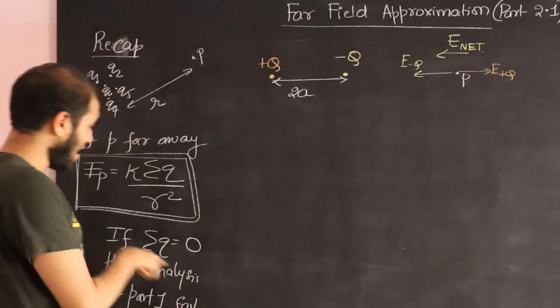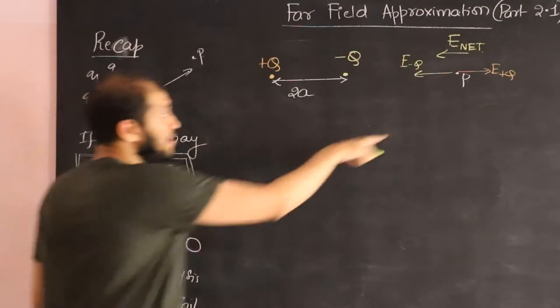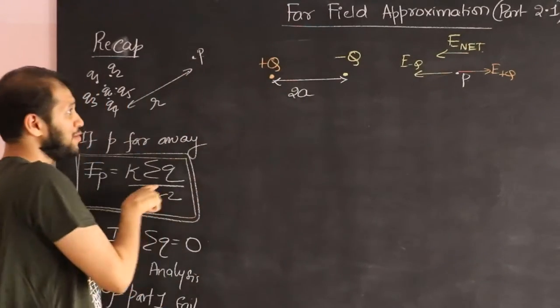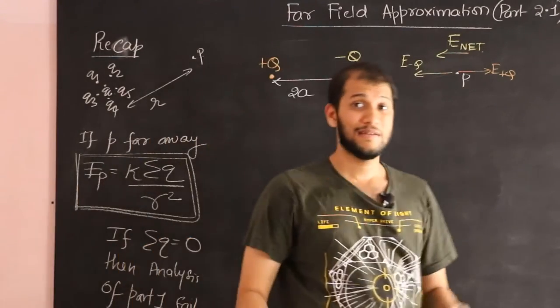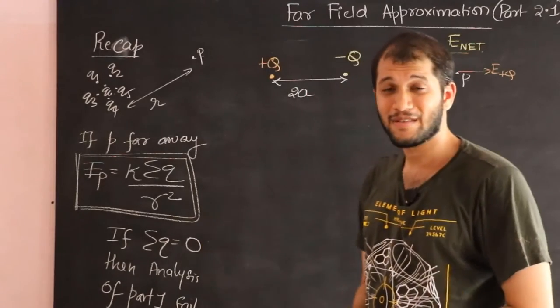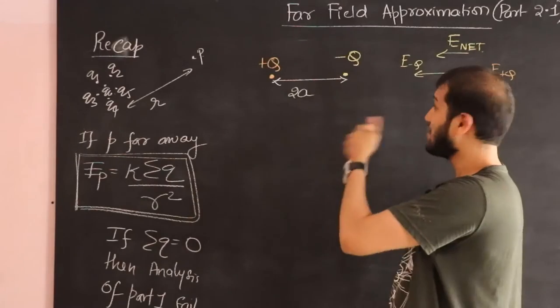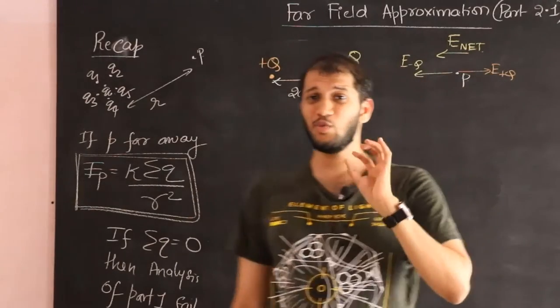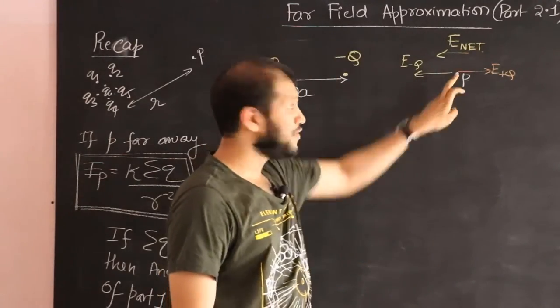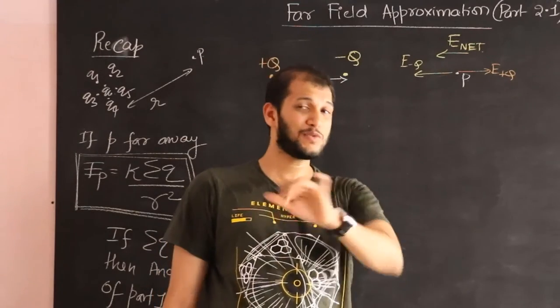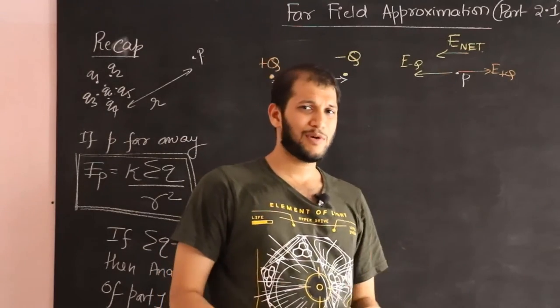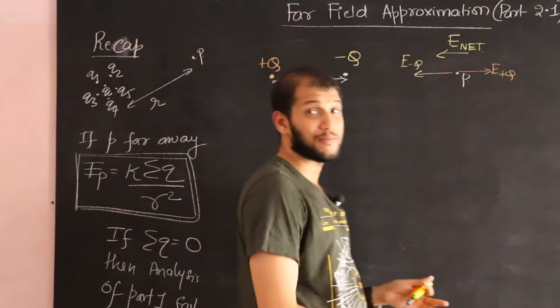But if you use the far field approximation, substitute sigma Q: plus Q minus Q, zero. And that's not possible. So the question is why did it work before and why doesn't it work now? The reason it worked before is because the net field was non-zero. That's why it worked. The way to think about this is imagine the following numbers.